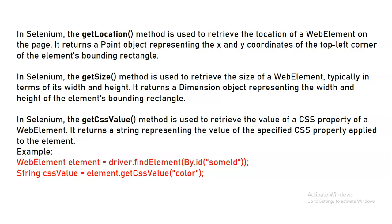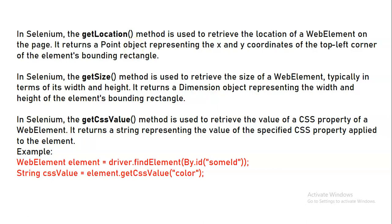First we'll see their usage and then we'll see how to do it practically. In Selenium, the get_location method is used to retrieve the location of the web element on the page. It returns a Point object representing the x and y coordinates of the top-left corner of the element's bounding rectangle — basically its rectangular position on the page.